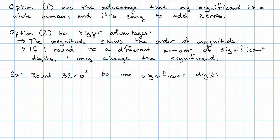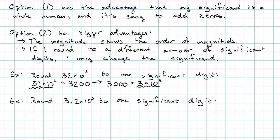What do I mean by that? If I go to round 32 times 10 to the second to one significant digit, that's 3200, which rounds to 3000, which is 3 times 10 to the third. On the other hand, if I decide to round 3.2 times 10 to the third to one significant digit, that's still 3200, which still rounds to 3000, which is 3 times 10 to the third. Notice I could have done that just by rounding the significand.